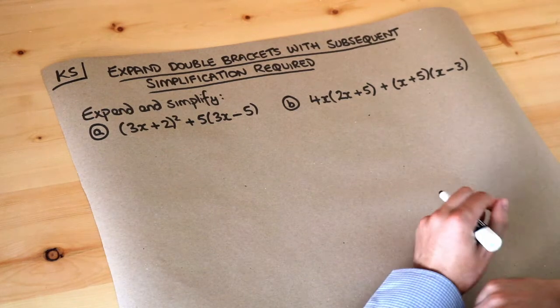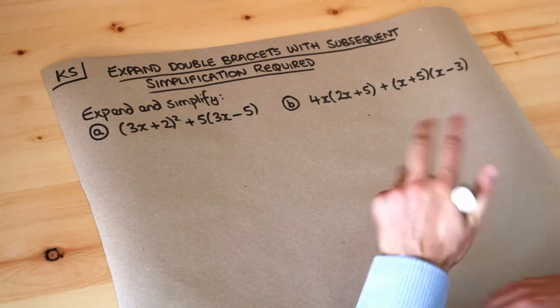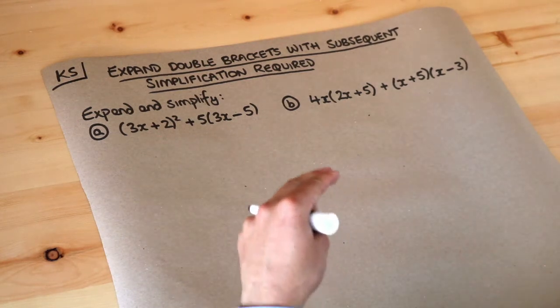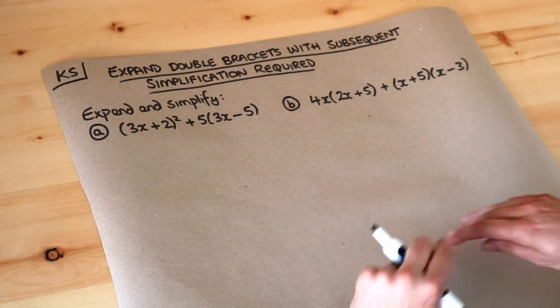Now there's nothing new in this video at all as long as you know how to expand out double brackets or single brackets. It's just that once we've expanded the brackets we'll need to simplify the expression by collecting like terms and you should know how to do that as well if you're watching this video.